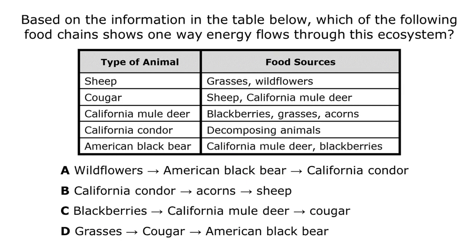Here is a practice question: based on the information in the table, which food chain shows one-way energy flow through this ecosystem? Food chains always start with a producer, so we can quickly eliminate any answer that doesn't. Answer A starts with wildflowers — that's a producer. Answer B starts with a California condor, a large bird, so we can scratch that out immediately. Answer C starts with blackberries and D starts with grasses — both producers.